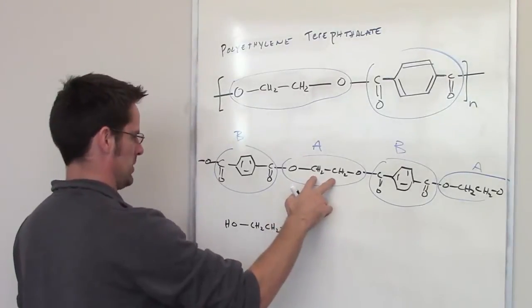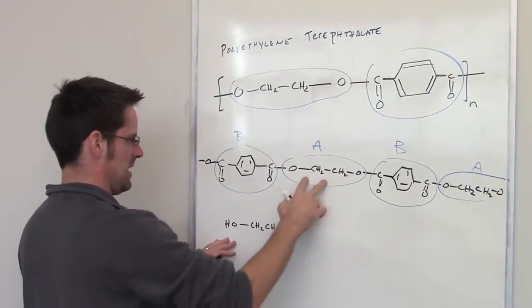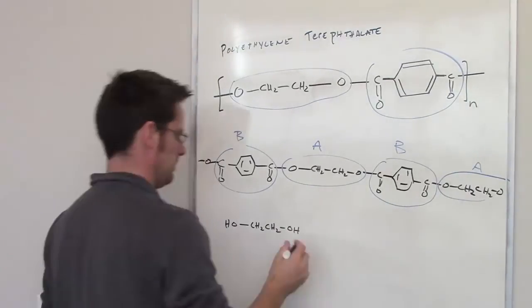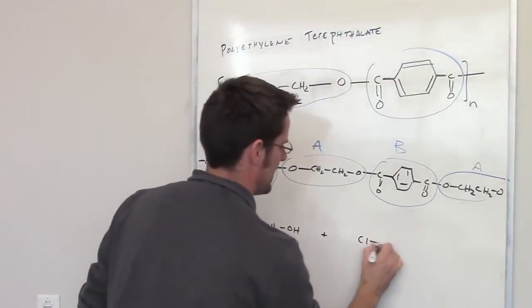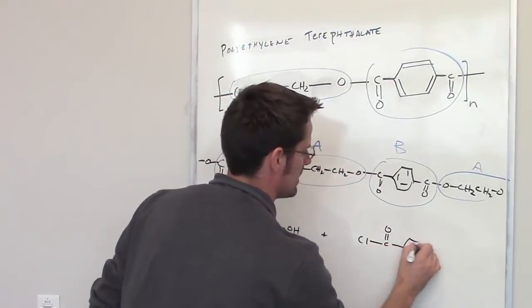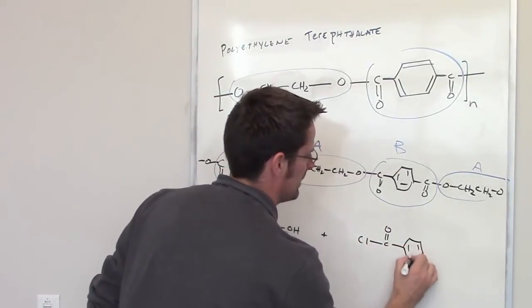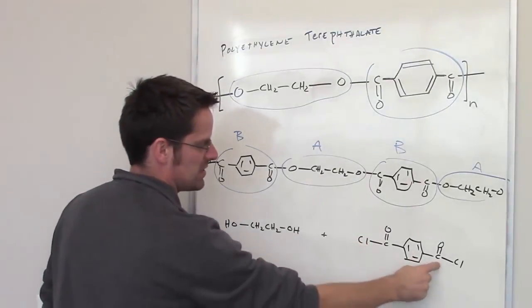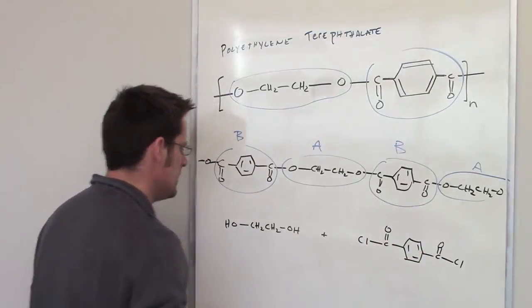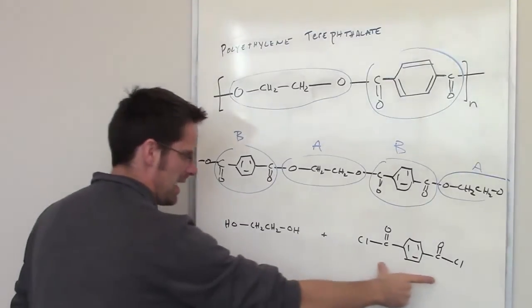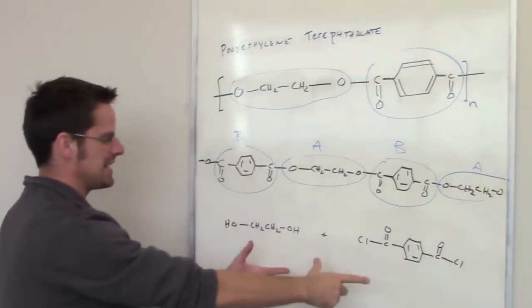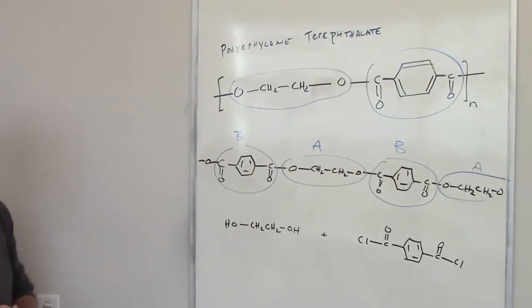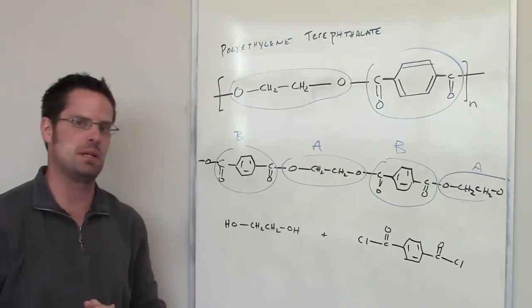I'm going to take a diol that looks exactly like part A, except I put hydrogens on the ends of the oxygens, and then I react that with a diacid chloride that looks like building block B, except I've placed chlorines onto the ends of these carbons that are doubly bonded oxygens. If I took these molecules and reacted them together, they would polymerize to form polyethylene terephthalate. Those are the two monomers I would use to make this polymer.